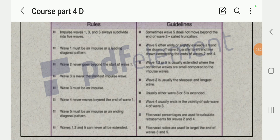So sometimes wave five does not move beyond the end of wave three, called truncation. Wave five often ends at or slightly exceeds a trend line drawn off wave three, parallel to a trend line drawn connecting the ends of wave two and four. Wave one, three, and five is the usual extended wave where the corrective waves are small compared to the impulse wave. Wave three is usually the deepest and the longest wave.